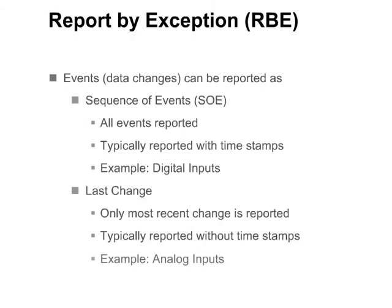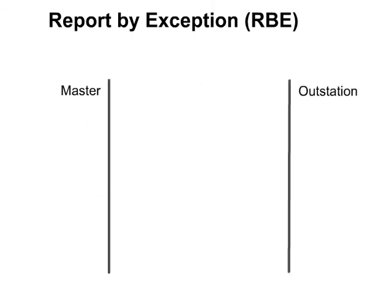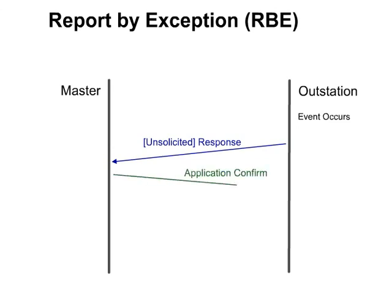Here is an illustration of reporting events via the report by exception mechanism. First, an event — for example a binary input change, or an analog change in excess of the deadband — occurs in the outstation. The outstation reports this change via a response to a class poll, or via an unsolicited response. The master confirms receipt of the events by sending an application confirm. The outstation removes the reported events from the event buffer only after it receives the application confirm from the master. This guarantees delivery of the event to the master.